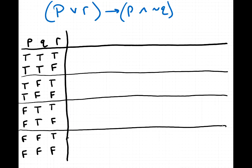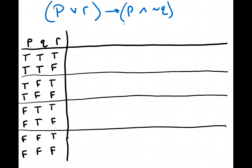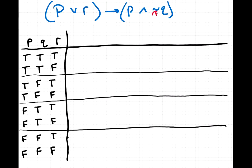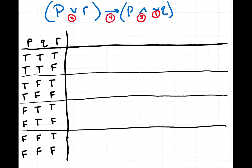We have four logical connectives in this compound statement: a negation, a conjunction, a disjunction, and a conditional. The final answer will be in the last column. I always start with negations first, then work inside parentheses to outside — just like order of operations in algebra. So we'll do the disjunction and conjunction inside the parentheses, and the conditional last. That's four operations, so there will be four additional columns.